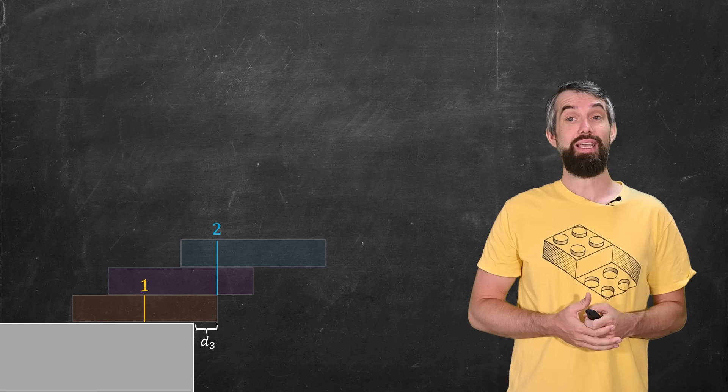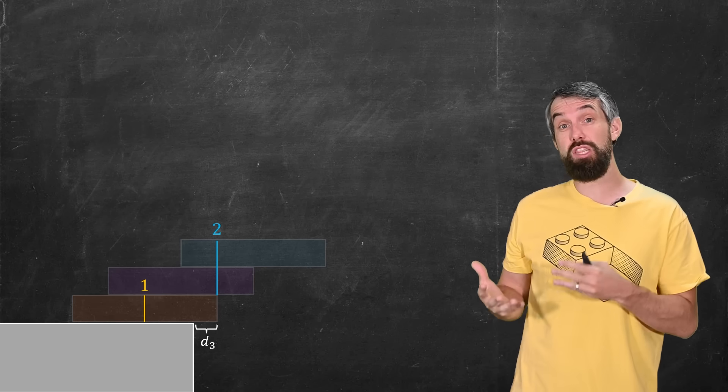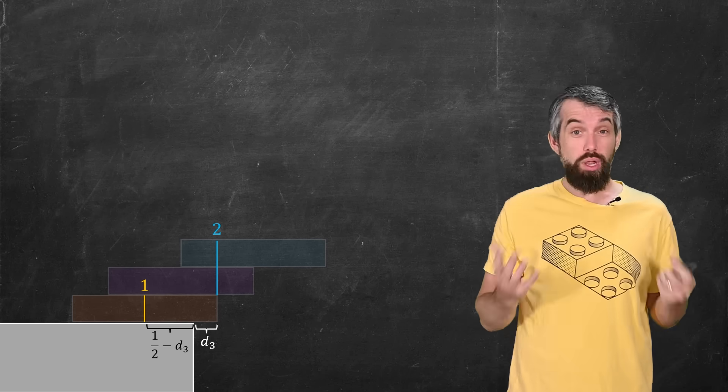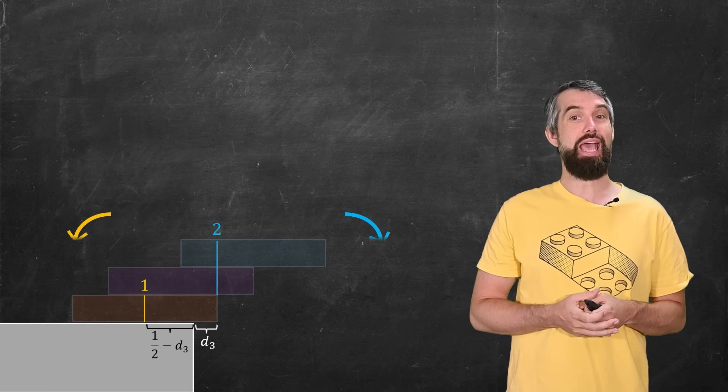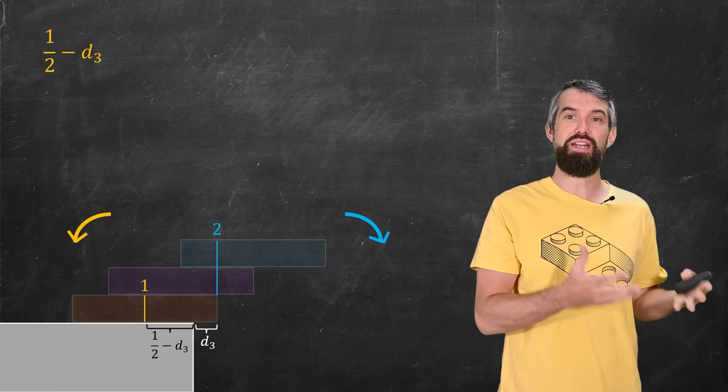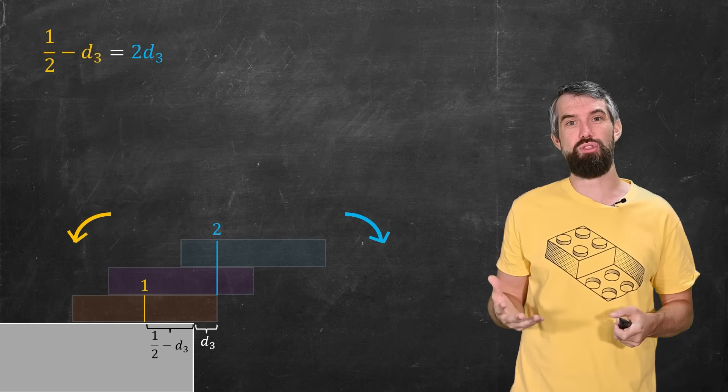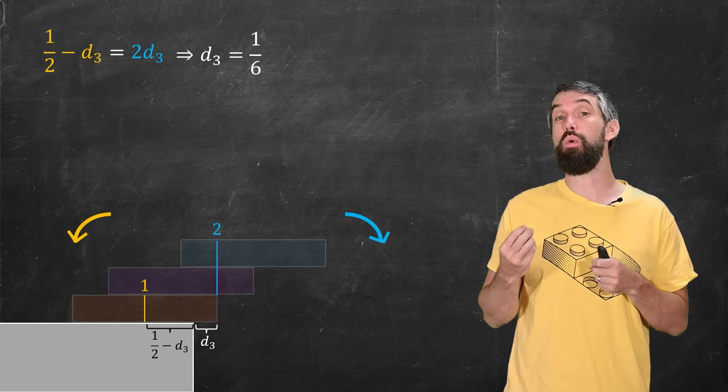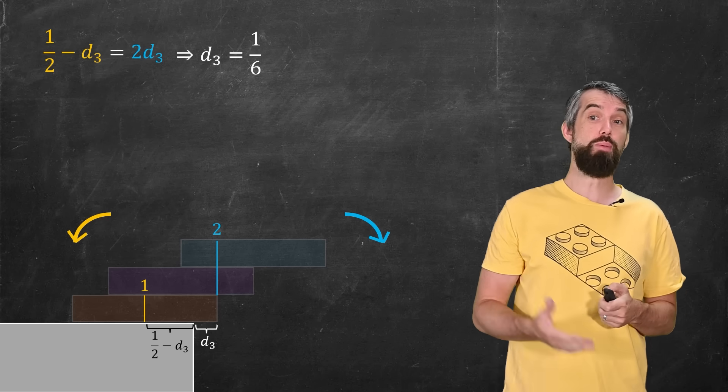Well, again, place d3 of a point mass. It's a distance of one half minus d3 away. And so we get the same torque equation trying to balance to the left and the right. And we get that one half minus d3 is twice d3. That gives me that d3 is now one sixth. And I can just keep on going here.